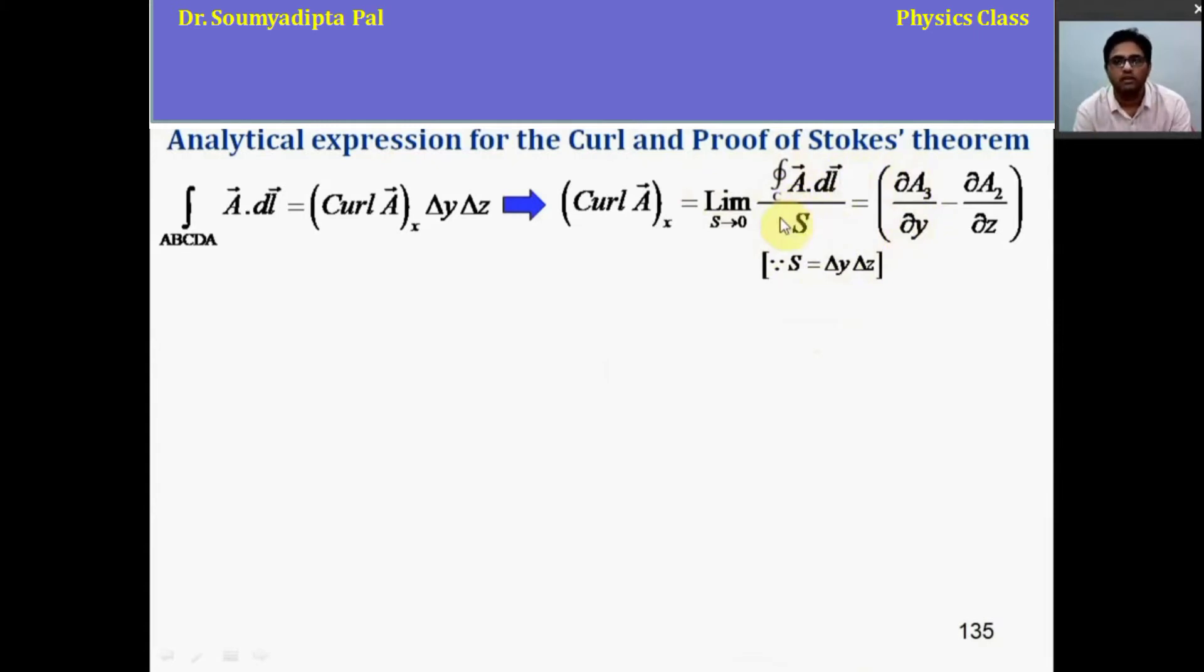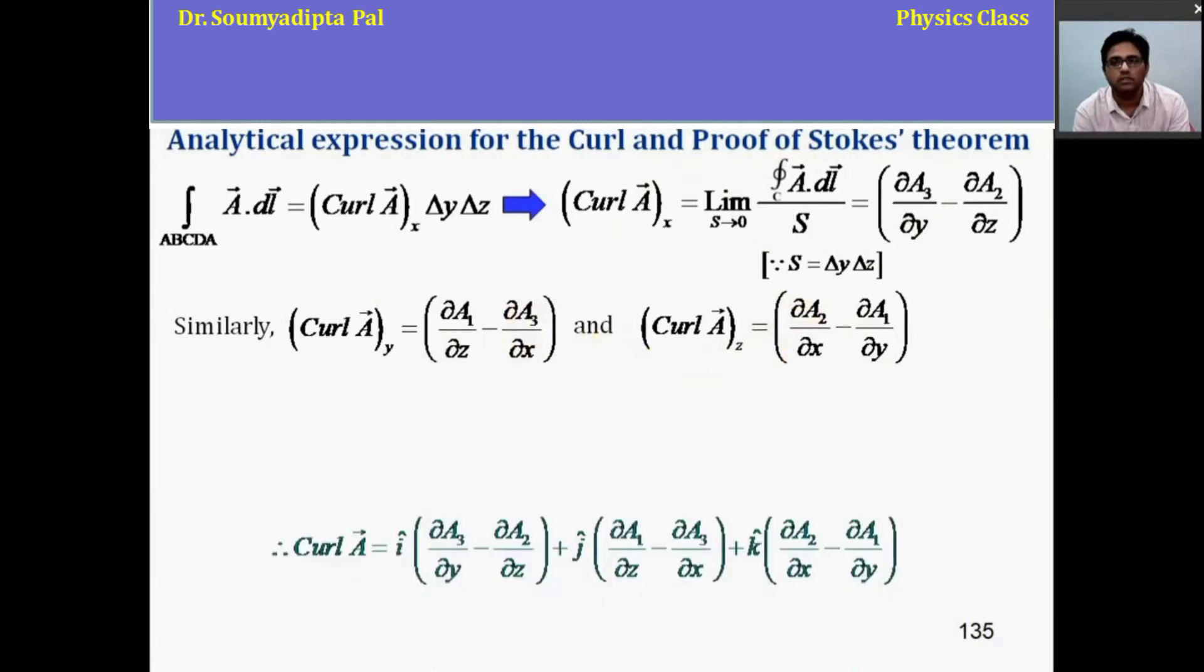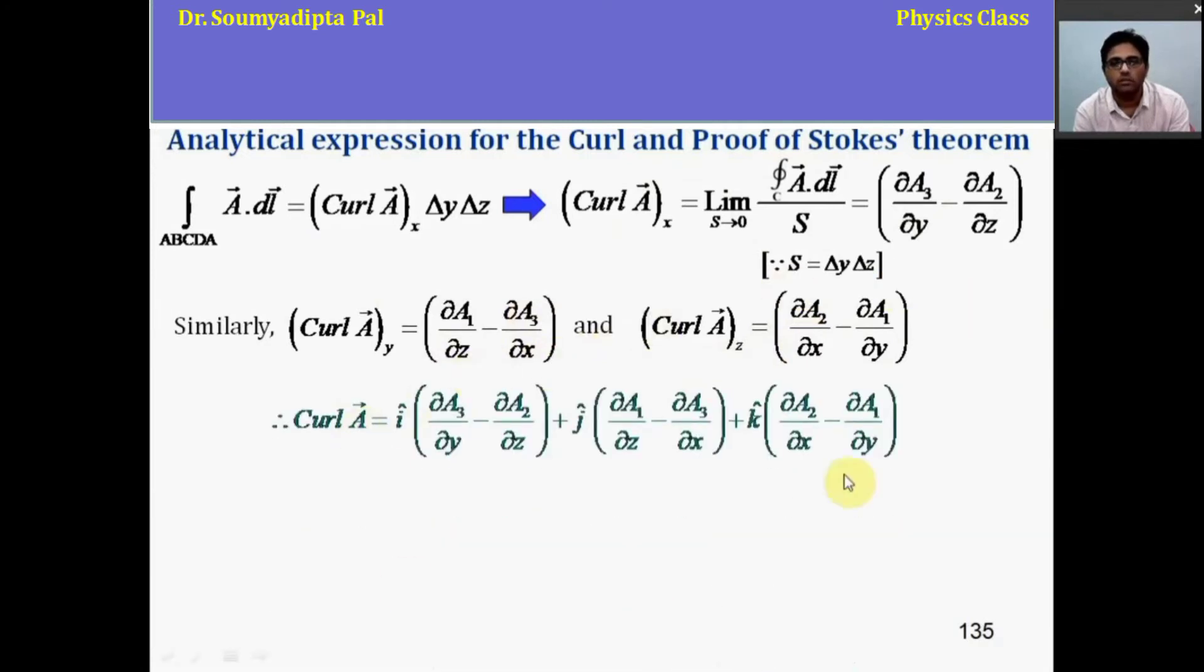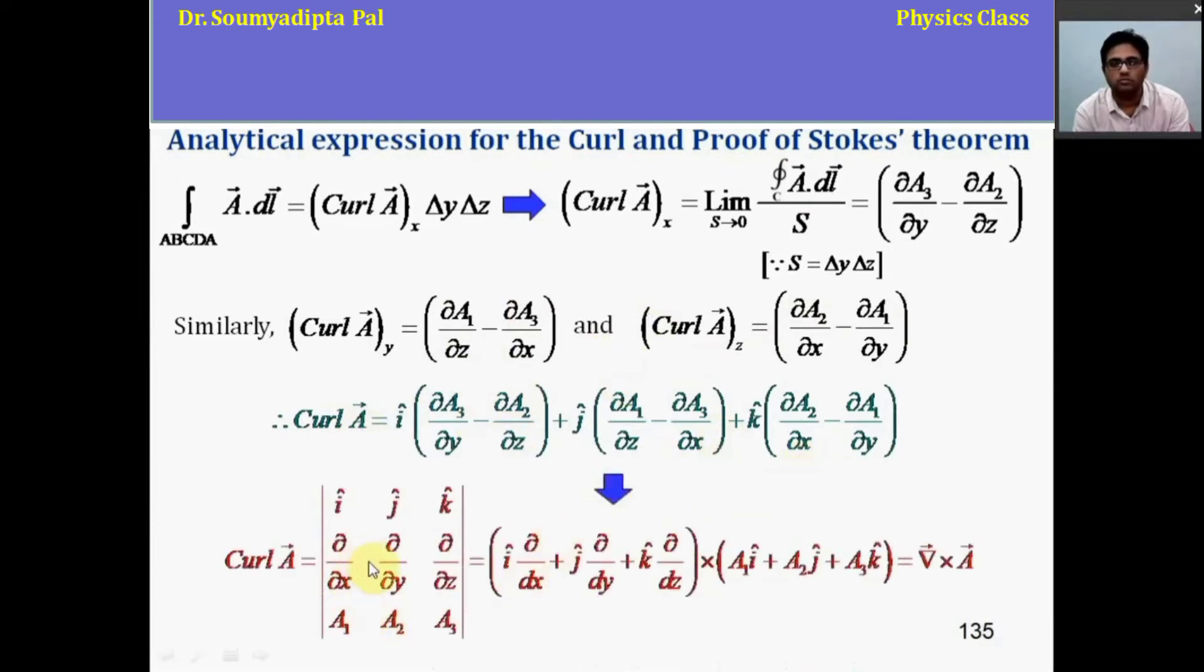Then similarly, y component of curl A will be del A1 del z minus del A3 del x and z component of curl A will be del A2 del x minus del A1 del y. Now, if we add these terms in component wise, we get this form of curl of A.